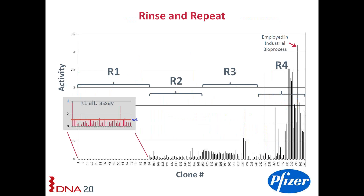This is an example from a project we did with Pfizer. In round one we couldn't measure anything in the commercial assay, so we used a surrogate assay with a higher detection level. In round two, three, and four, we used the real commercial assay, bringing forward information captured in each prior round. What you see is growth from below the level of detection in round one to variants now making metric tons of pharmaceutical intermediate through biocatalysis — all in only 307 measurements.